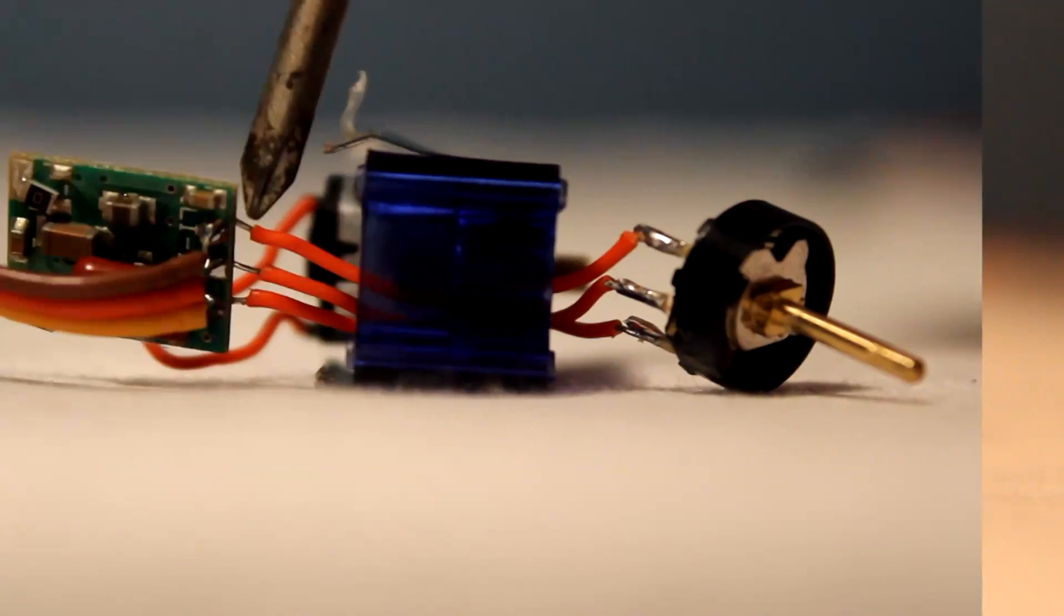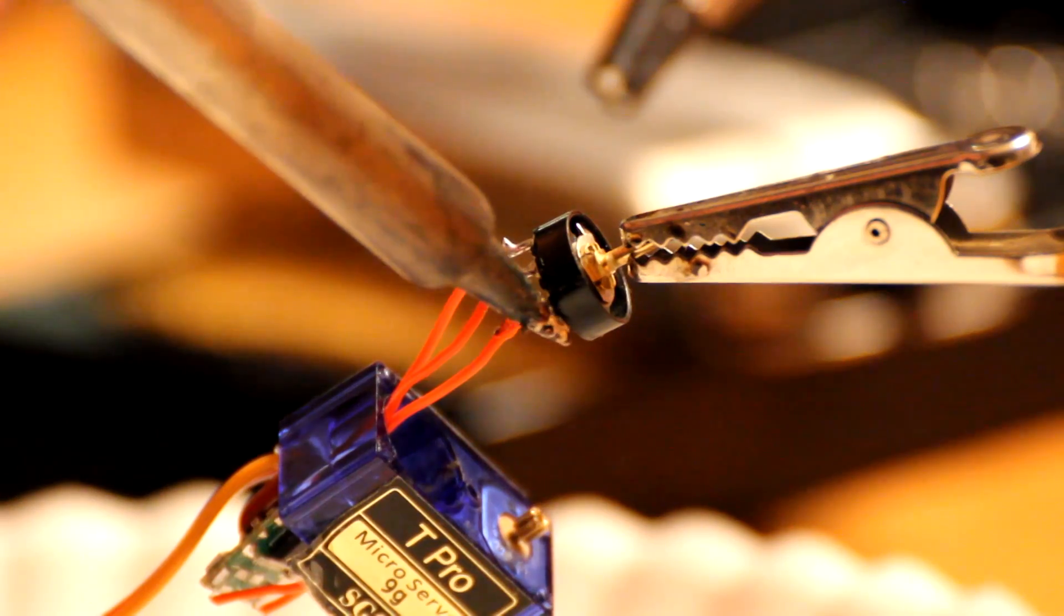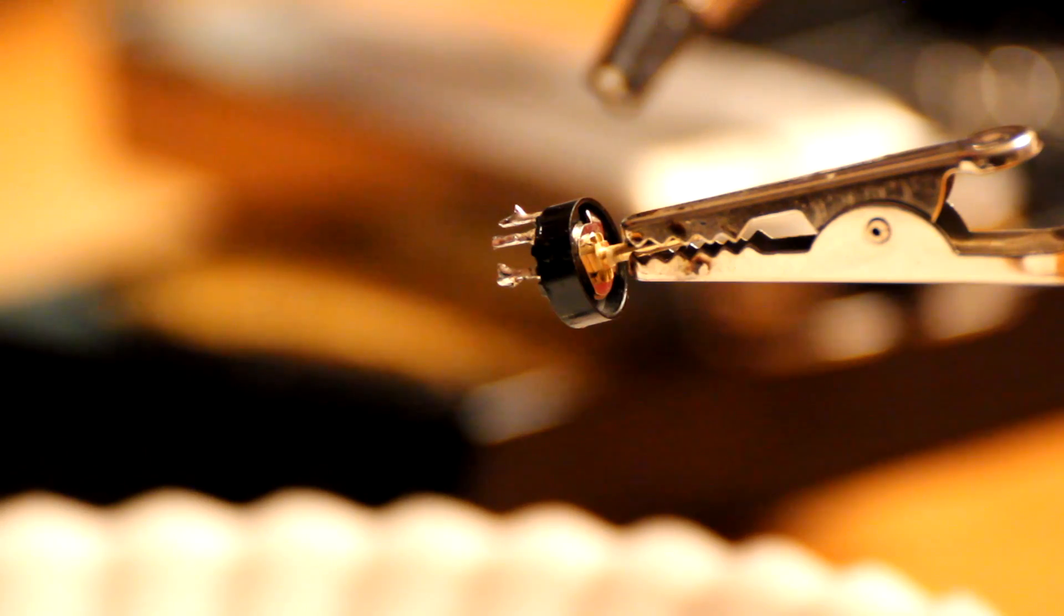Then remove the potentiometer. You will notice three wires connected from the board to the potentiometer. Desolder the wires from the potentiometer and set it aside. You can discard the remains of the servo you took apart.